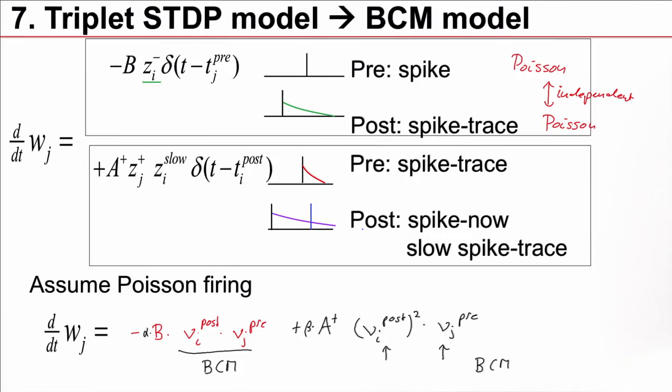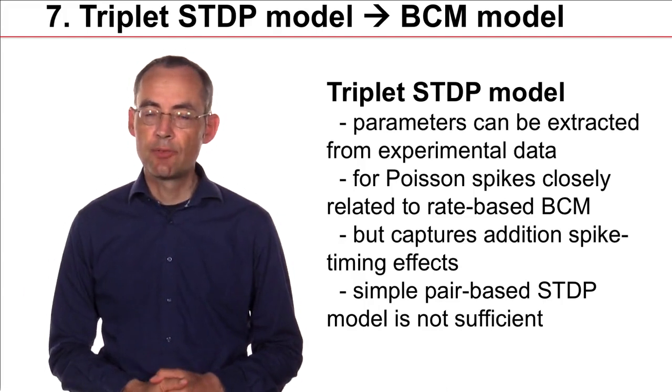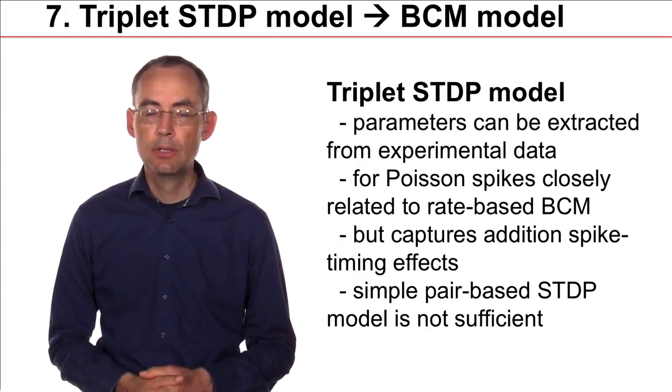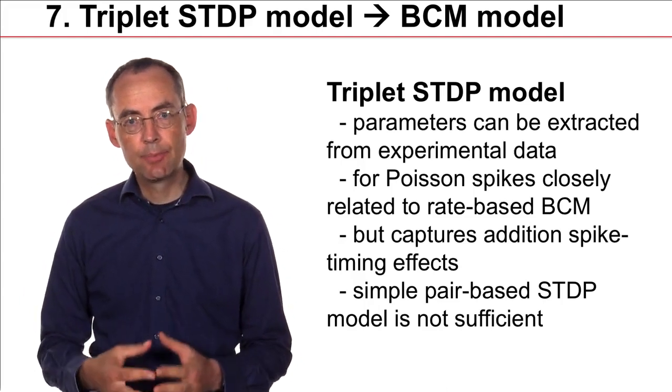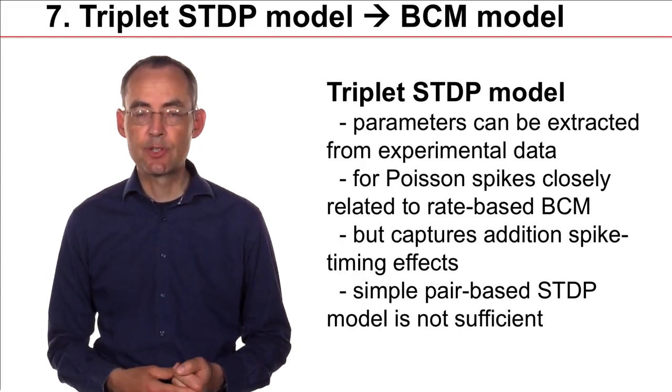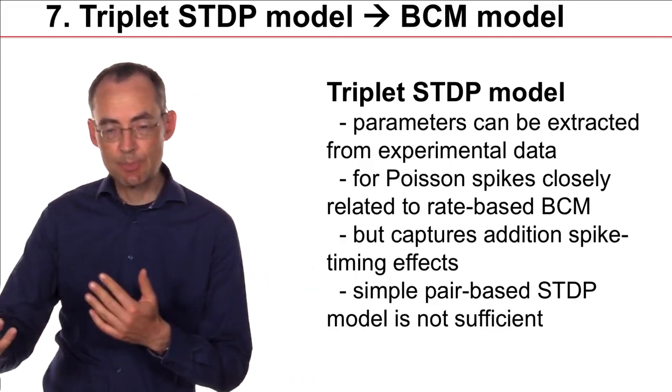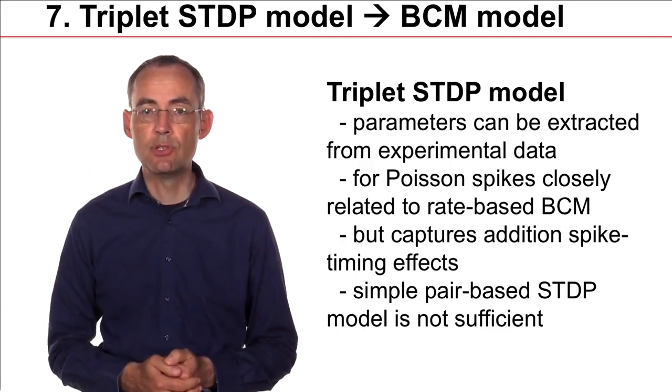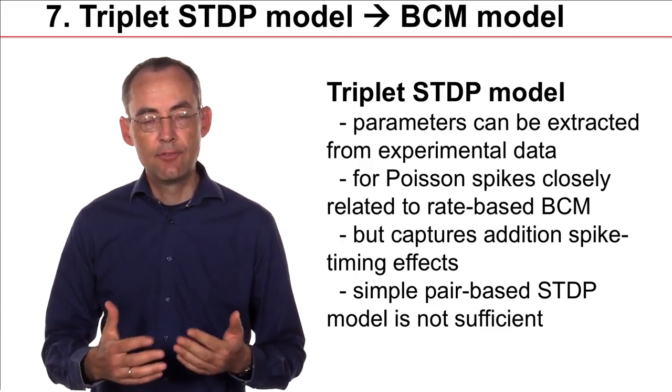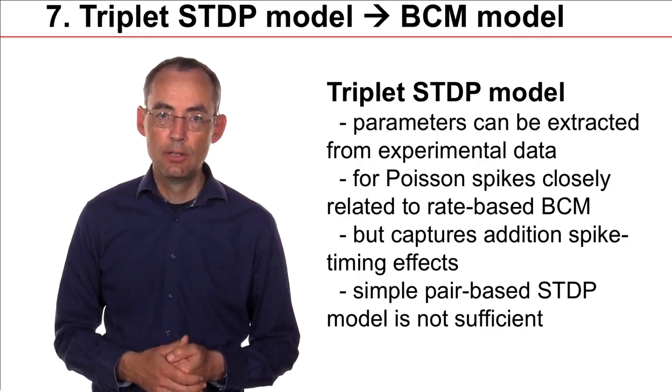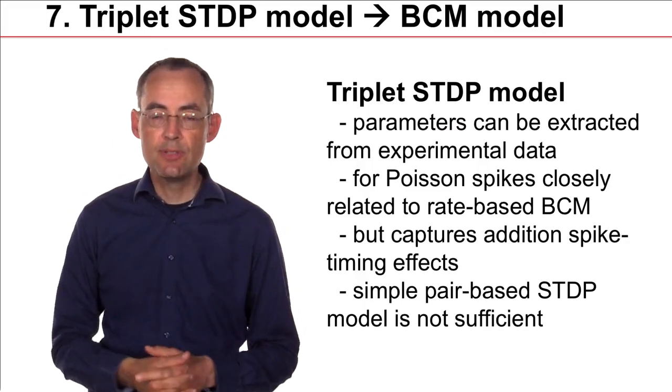The parameters of the triplet model can be extracted from experiments. And this transition from spikes to rates allows us to fix the parameters of the BCM model. So, the triplet model is a very nice model. It's mathematically simple. And we can extract parameters of the model directly from the experiment. If you make the assumption that the input spike train and the post-synaptic spike train are both independent Poisson processes, then we can find an equivalence to the BCM model, which we can use to fix parameters of the BCM model.